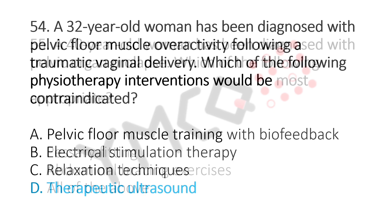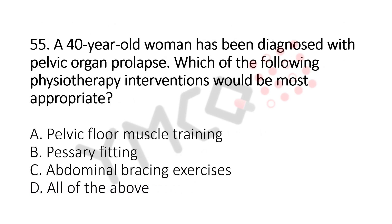Now let's move to question number 55. A 40-year-old woman has been diagnosed with pelvic organ prolapse. Which of the following physiotherapy interventions would be the most appropriate? Option A, pelvic floor muscle training. Option B, pessary fitting. Option C, abdominal bracing exercises. Option D, all of the above. And the answer is Option A, pelvic floor muscle training.